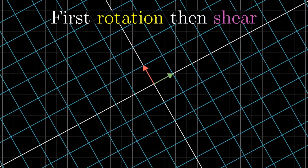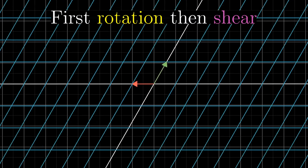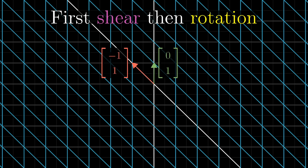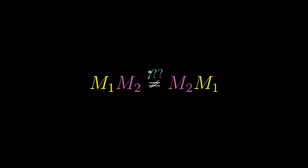If you first rotate, then do the shear, i hat ends up over at 1,1, and j hat is off in a different direction at negative 1,0, and they're pointing farther apart. The overall effect here is clearly different, so evidently, order totally does matter.